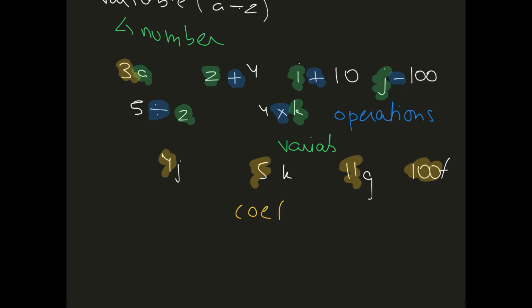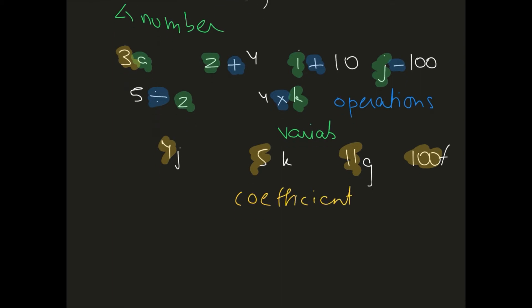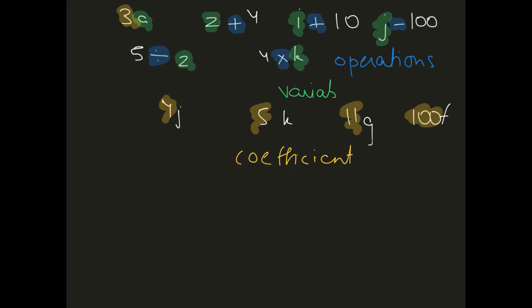Then we have the constant. A constant is any term which is not with a variable. So if we write 10e plus 11, or 100f plus 5, in both cases the 11 and the 5 are the constants.